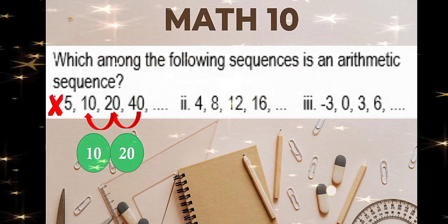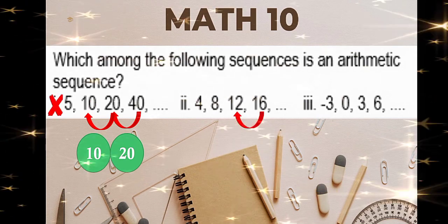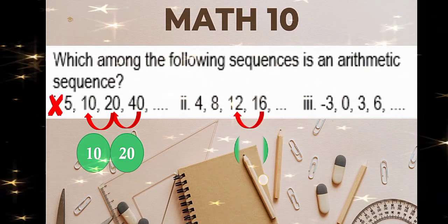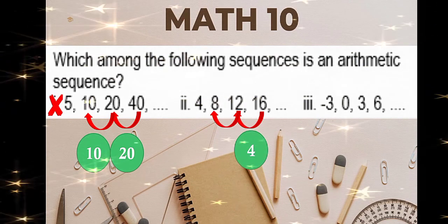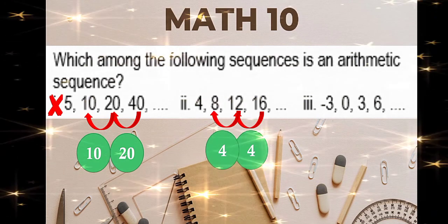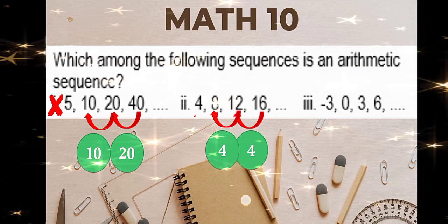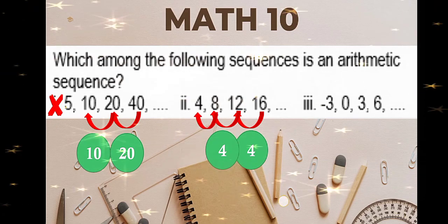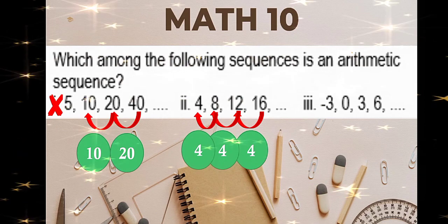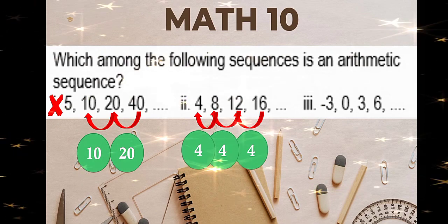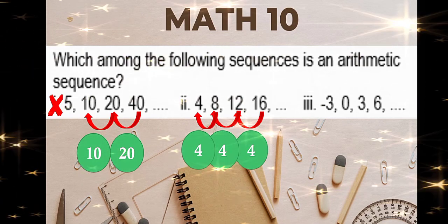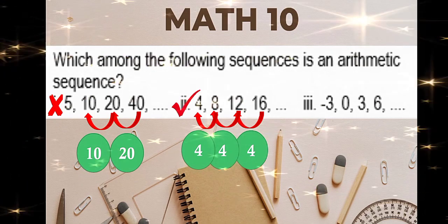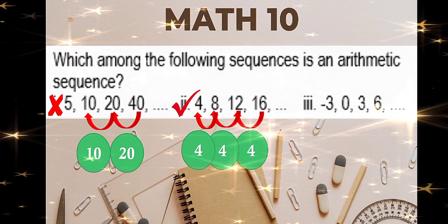Let's look for the common difference. 16 minus 12 is 4. 12 minus 8 is 4 also. And 8 minus 4 is 4. So the common difference is 4. Thus, number 2 is an arithmetic sequence.